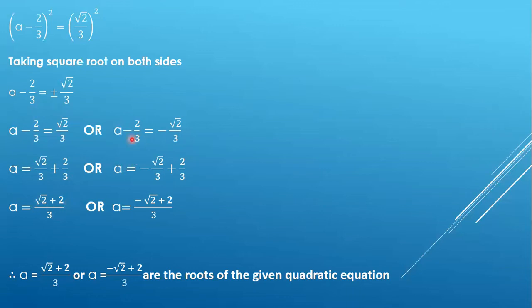For the second case, we have a - 2/3 = -√2/3. We will take this -2/3 to the right hand side and the equation becomes -√2/3 + 2/3, which is (-√2 + 2)/3.